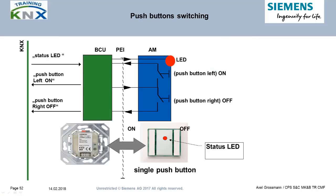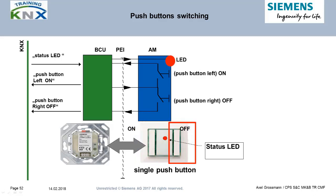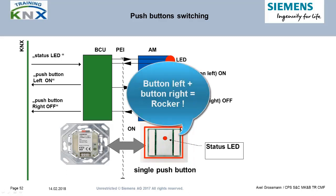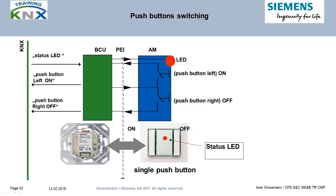Let's now talk about the principle of a sensor — more specifically, a push button sensor. This sample shows the simple rocker function. The push button has two single buttons grouped to a rocker; therefore we call it a 'push button single.' Other manufacturers, referring to the number of buttons, may call it a 'push button double.' Therefore, it is always important not only to compare names but also the hardware directly.